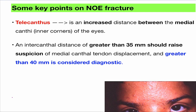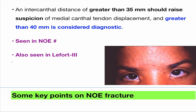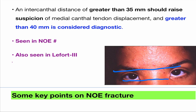So this is traumatic telecanthus, seen in NOE fracture. It is also seen in LeFort III, because LeFort III can reach through the ethmoid bone region. That's why you also see CSF rhinorrhea. Whereas LeFort II is much below — only if very severe does it give CSF rhinorrhea, and most of the time it is not compromising the ethmoid bone, so you don't see traumatic telecanthus. Traumatic telecanthus is seen in NOE and also in LeFort III.